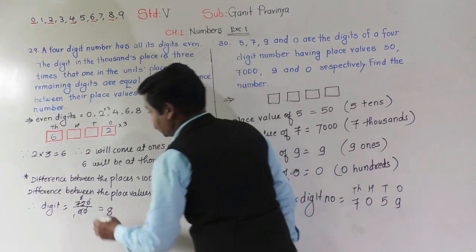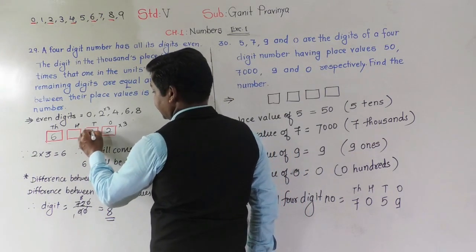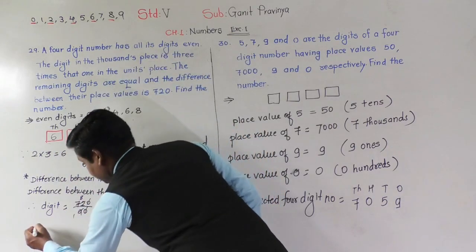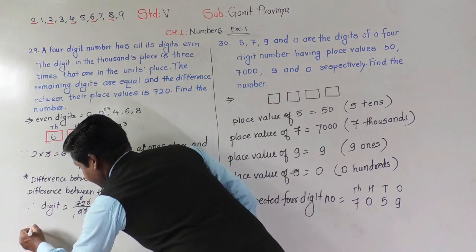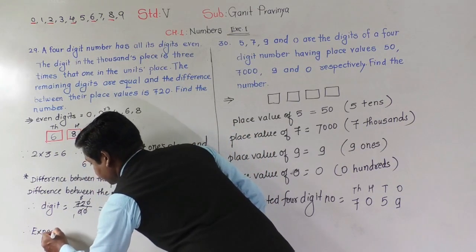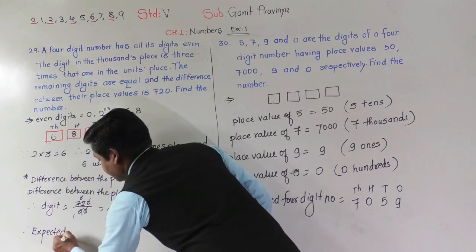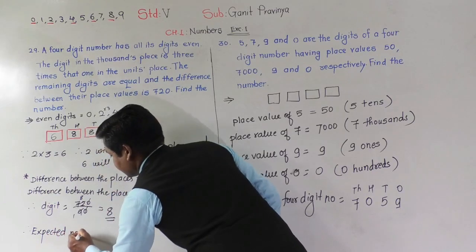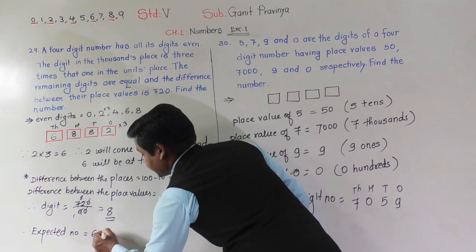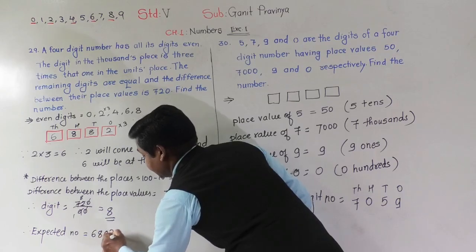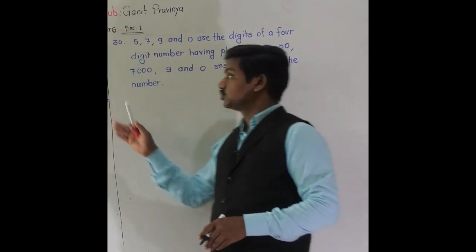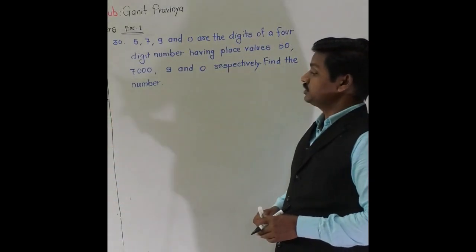So 8 will come at both the 10s place and the 100s place. The expected number is 6882. Pause the video, write this down, then we will move to the next question.